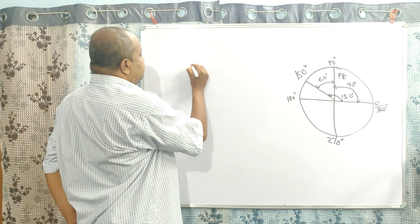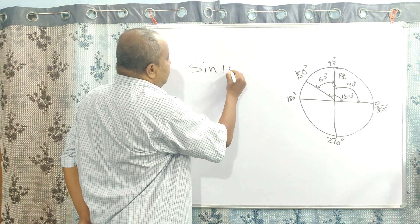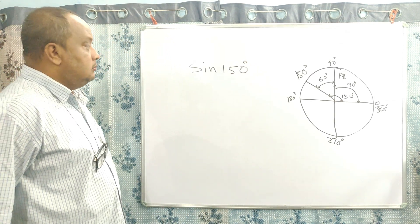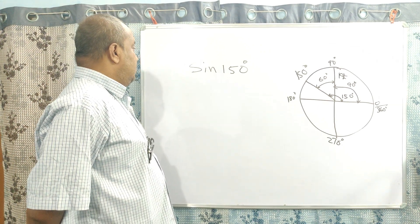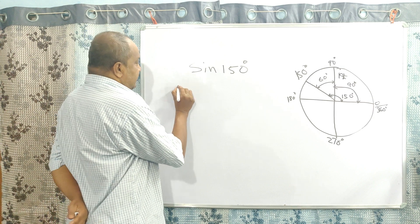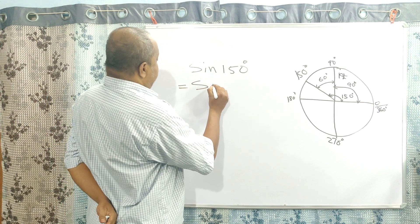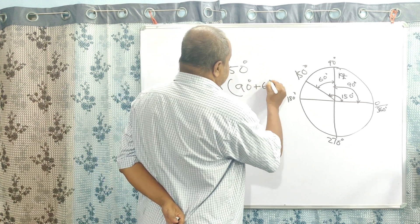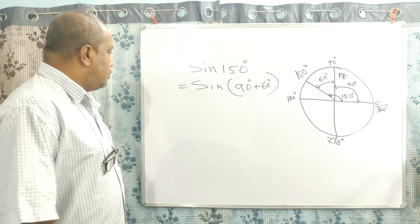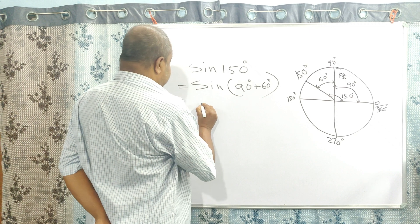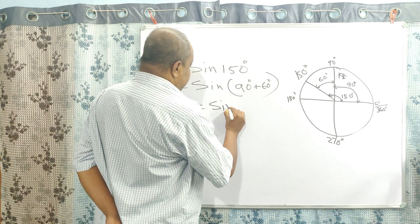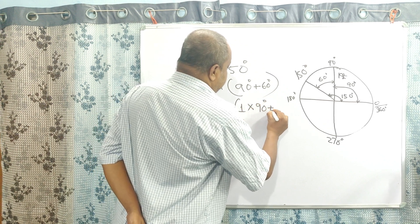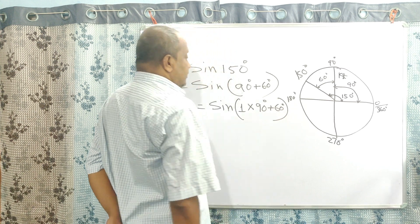So sin of 150 degrees is equal to what? Now sin of 150 degrees we can write in this format: sin of 90 degrees plus 60 degrees.